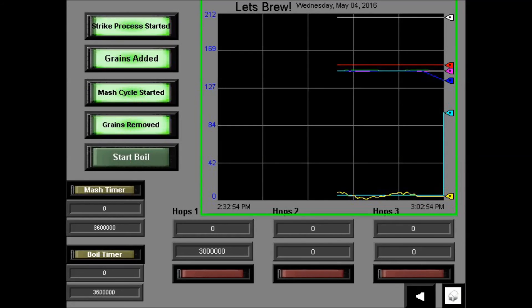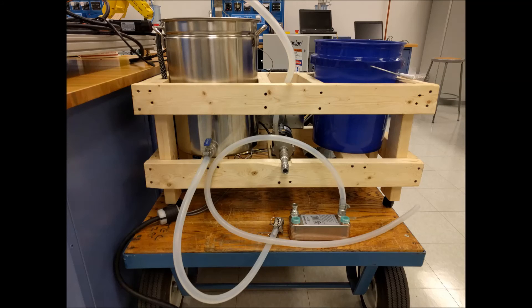Once the boil is done, it is time to take the plate chiller and connect one end to the spigot and the other to the carboy. Also, water is passed through the chiller and the temperature of the brew is dropped from a boiling to a fermentable 80 to 85 degrees.